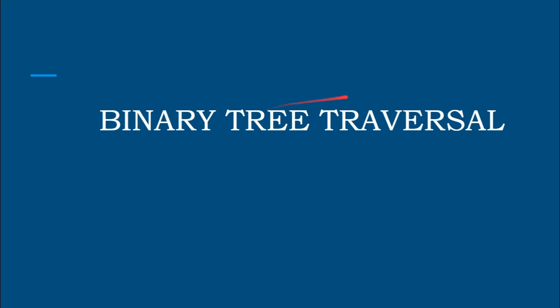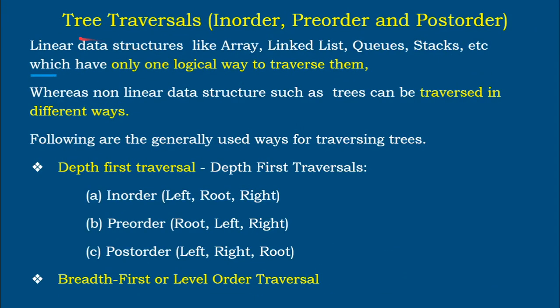Hello everyone. In this video we are going to see about binary tree traversal. A binary tree is a tree having either 0, 1, or 2 children, and traversal means visiting each node once. The possible types of traversal are in-order, pre-order, and post-order, which come under depth-first traversal, and we also have breadth-first traversal, also called level-order traversal, which we will see with examples in the coming slides.